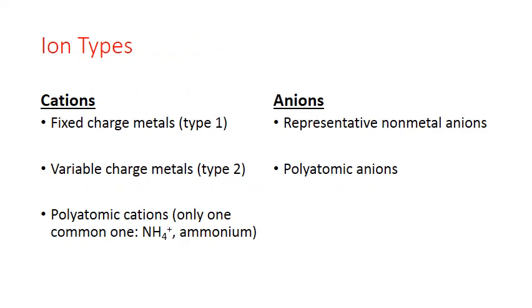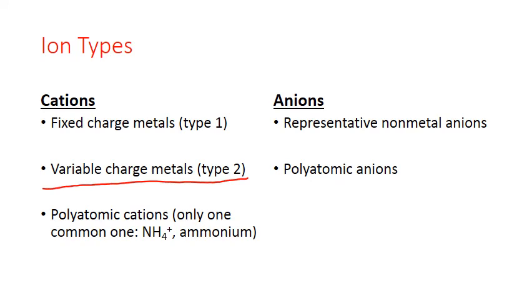Here are the different ion types. For cations, these include fixed charge metals — elemental metal ions that have the same predictable charge we can figure out based upon the position of the metal on the periodic table. These are our representative metals, generally called type 1. You can also have variable charge metals, generally your transition metals and some heavier metals, which can actually have multiple charges — usually one of two or three different charges. That means the name of the ion has to indicate the charge you're dealing with. These are also known as type 2 metals.